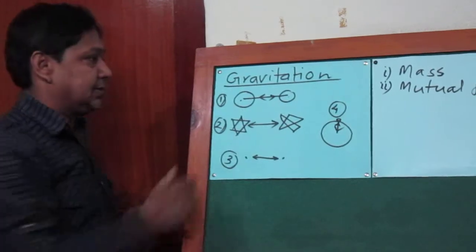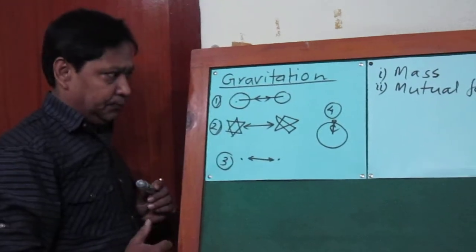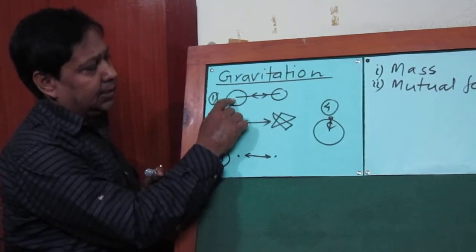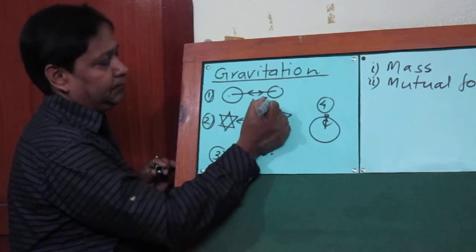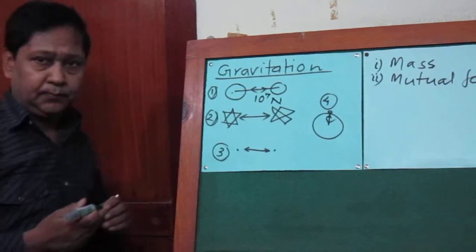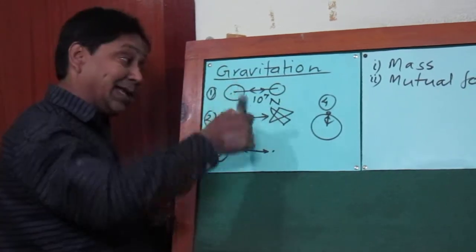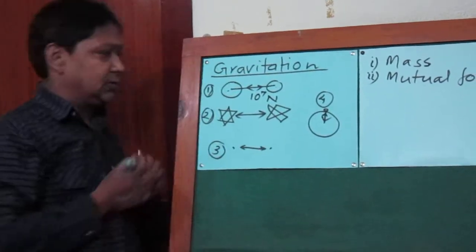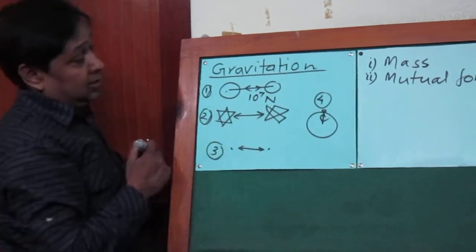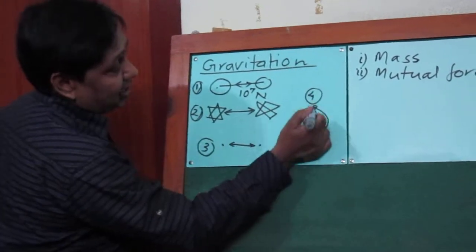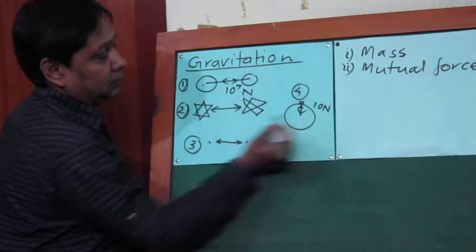Now let's talk about the third point. This heavenly body attracts the other — let's say the force of attraction is 10 to the power 7 Newton. If the first one attracts the second one with a force of 10^7 Newton, then the second one also attracts with the same force of 10^7 Newton. Let's say the earth is attracting this body towards its center with a force of 10 Newton.